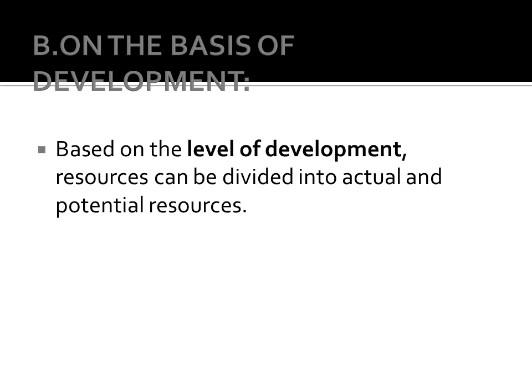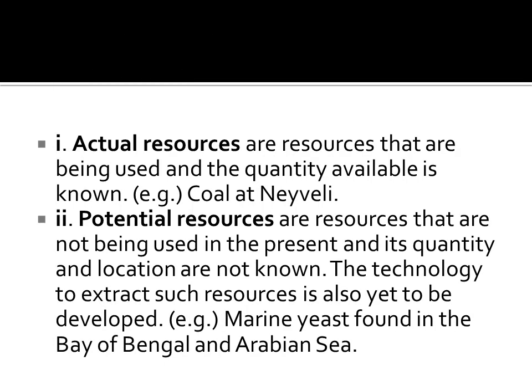Based on the level of development, resources can be divided into actual and potential resources. Actual resources are resources that are being used and the quantity available is known — for example, coal at Neyveli. Potential resources are resources not being used in the present and their quantity and location are not known. The technology to extract such resources is also yet to be developed — for example, marine yeast found in the Bay of Bengal and Arabian Sea.